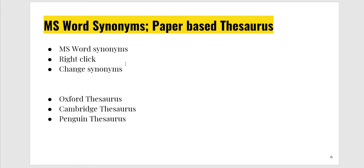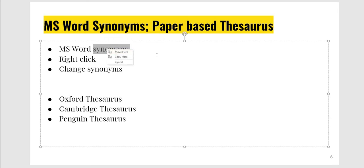The second way is MS Word synonyms. Suppose you find a word — you click on it, then right-click in MS Word and you will find synonyms. Five or six synonyms will be given and you can choose any one. In paper-based work, you can find the Oxford Thesaurus, Cambridge Thesaurus, and Penguin Thesaurus — they are very good.